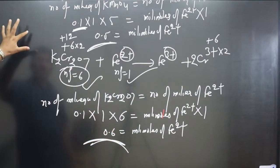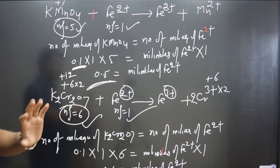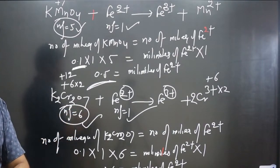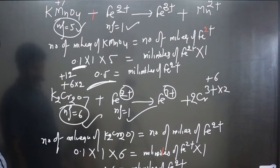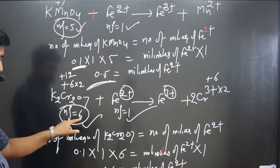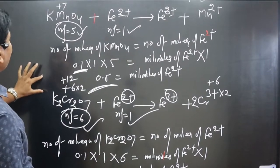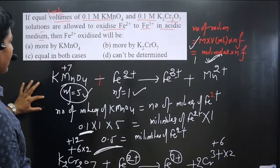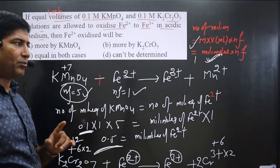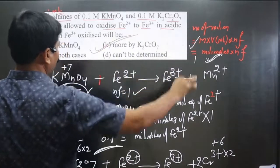Logically, you can compare n-factor values: higher n-factor means higher capacity to oxidize more moles. KMnO₄ has n-factor = 5, while K₂Cr₂O₇ has n-factor = 6 — a higher difference in oxidation number means more electron transfer. Therefore K₂Cr₂O₇ oxidizes more millimoles of Fe²⁺ into Fe³⁺. The answer is option B.